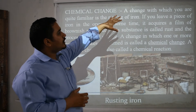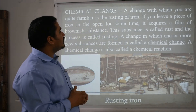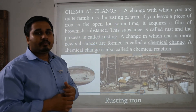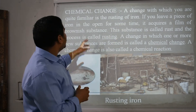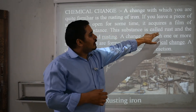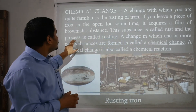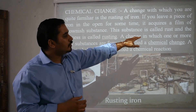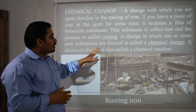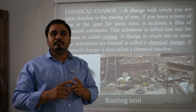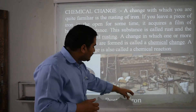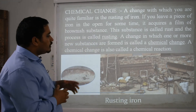Now here is chemical change. A change with which you are quite familiar is the rusting of iron — very common in our gardens or parking lots. If you leave a piece of iron in the open for some time, it acquires a film of brownish substance. This substance is called rust and the process is called rusting. A change in which one or more new substances are formed is called a chemical change. A chemical change is also called a chemical reaction because it involves two substances forming a new substance. Here is a plate shown which is full of rust — an open source example available.